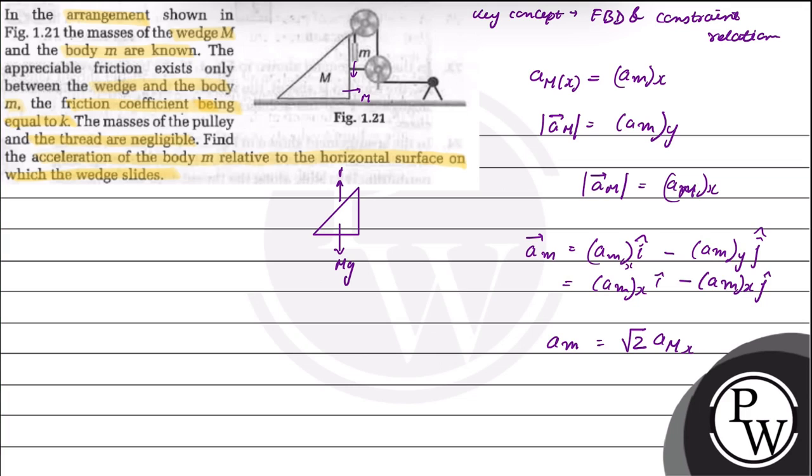The wedge is moving downward, so friction will act downward. The box of small m will provide a normal N.